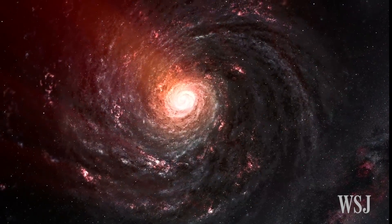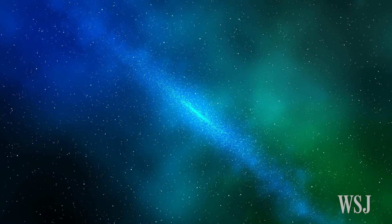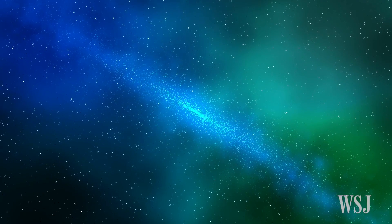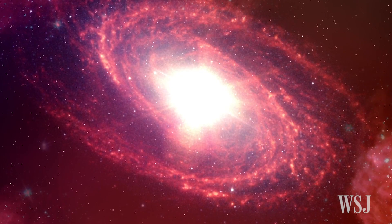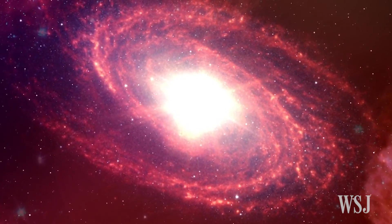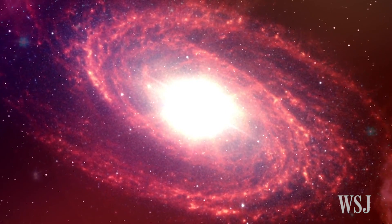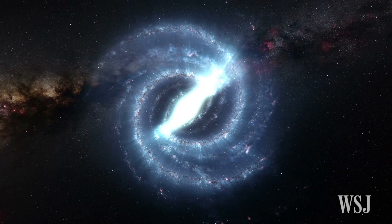The scientists expected that gigantic galaxies called ellipticals would dominate their search. Instead, they found that 53 of the brightest galaxies in a sample of 800,000 galaxies had a spiral rather than elliptical shape.